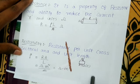Conductance represents the ability of the conductor to allow electrons to flow. A good conductor has high conductance, while a bad conductor has low conductance.